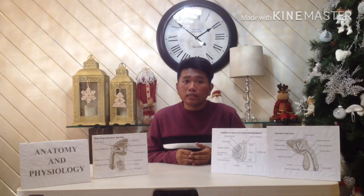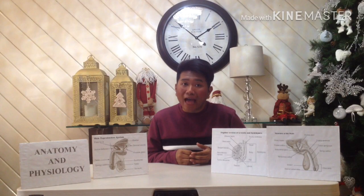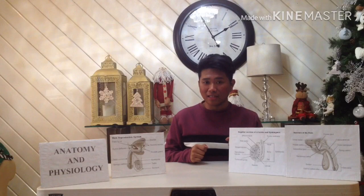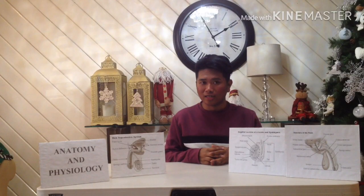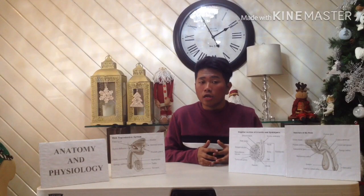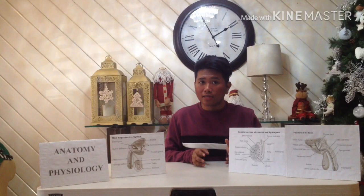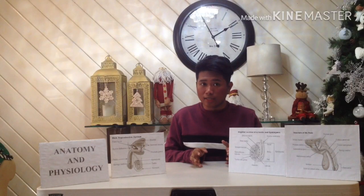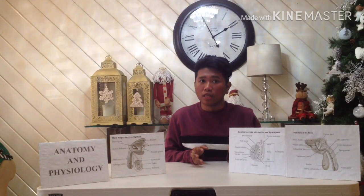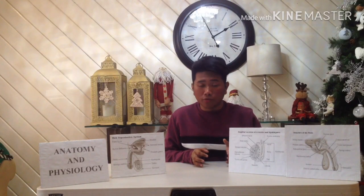Each ductus deferens at the ampulla joins the duct from the adjacent seminal vesicle to form a short ejaculatory duct. Each ejaculatory duct passes through the prostate gland and empties into the urethra.